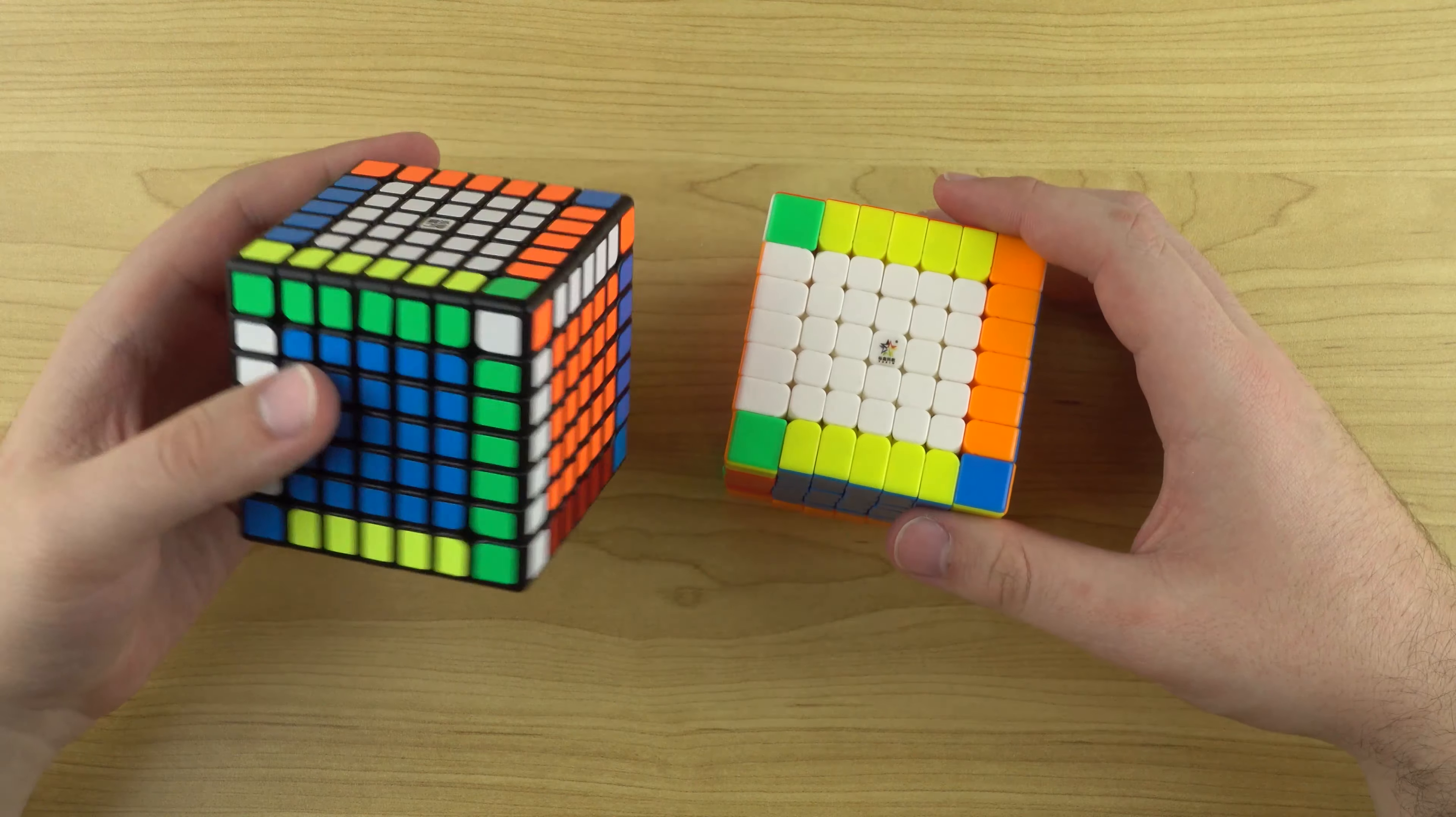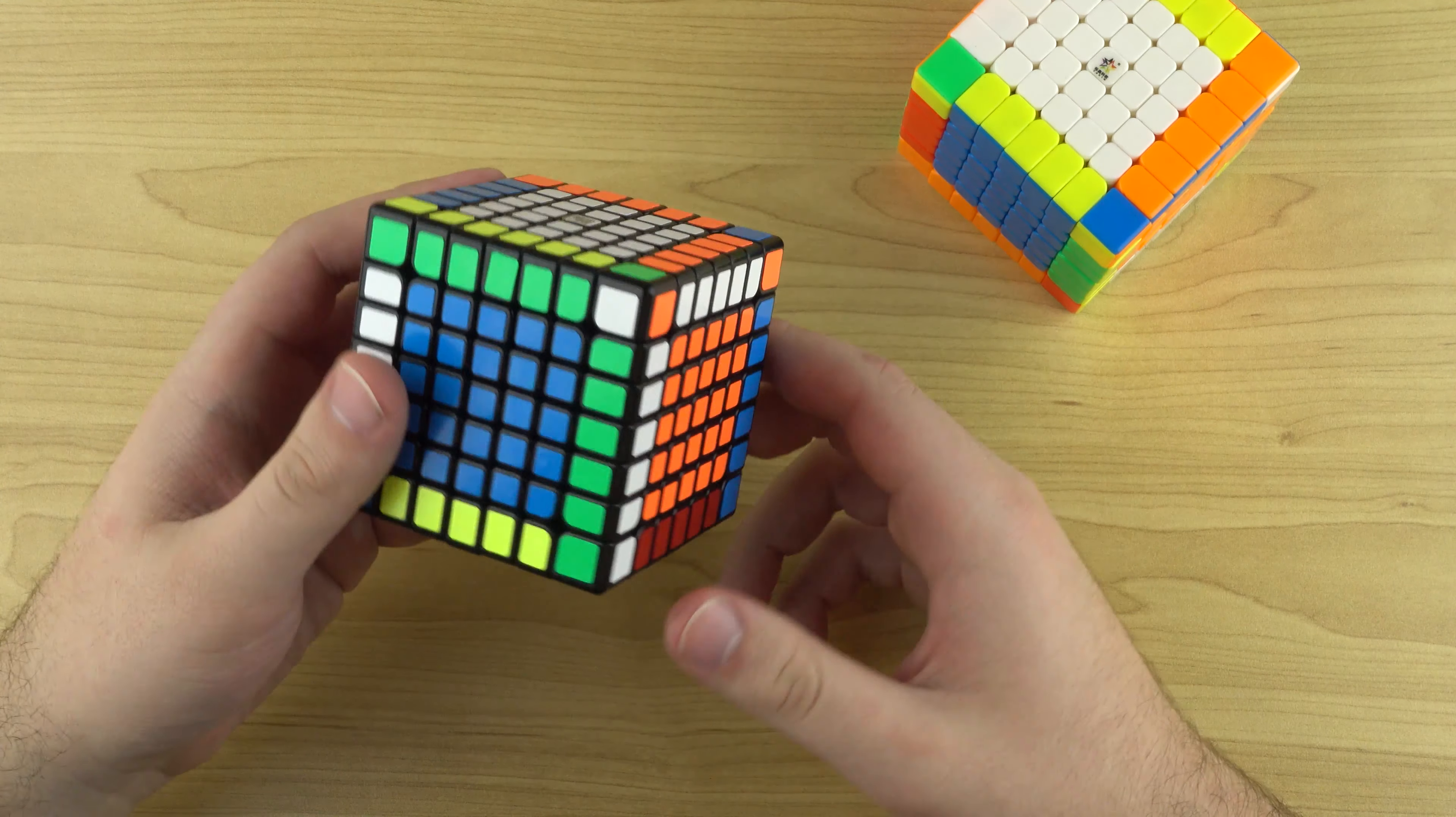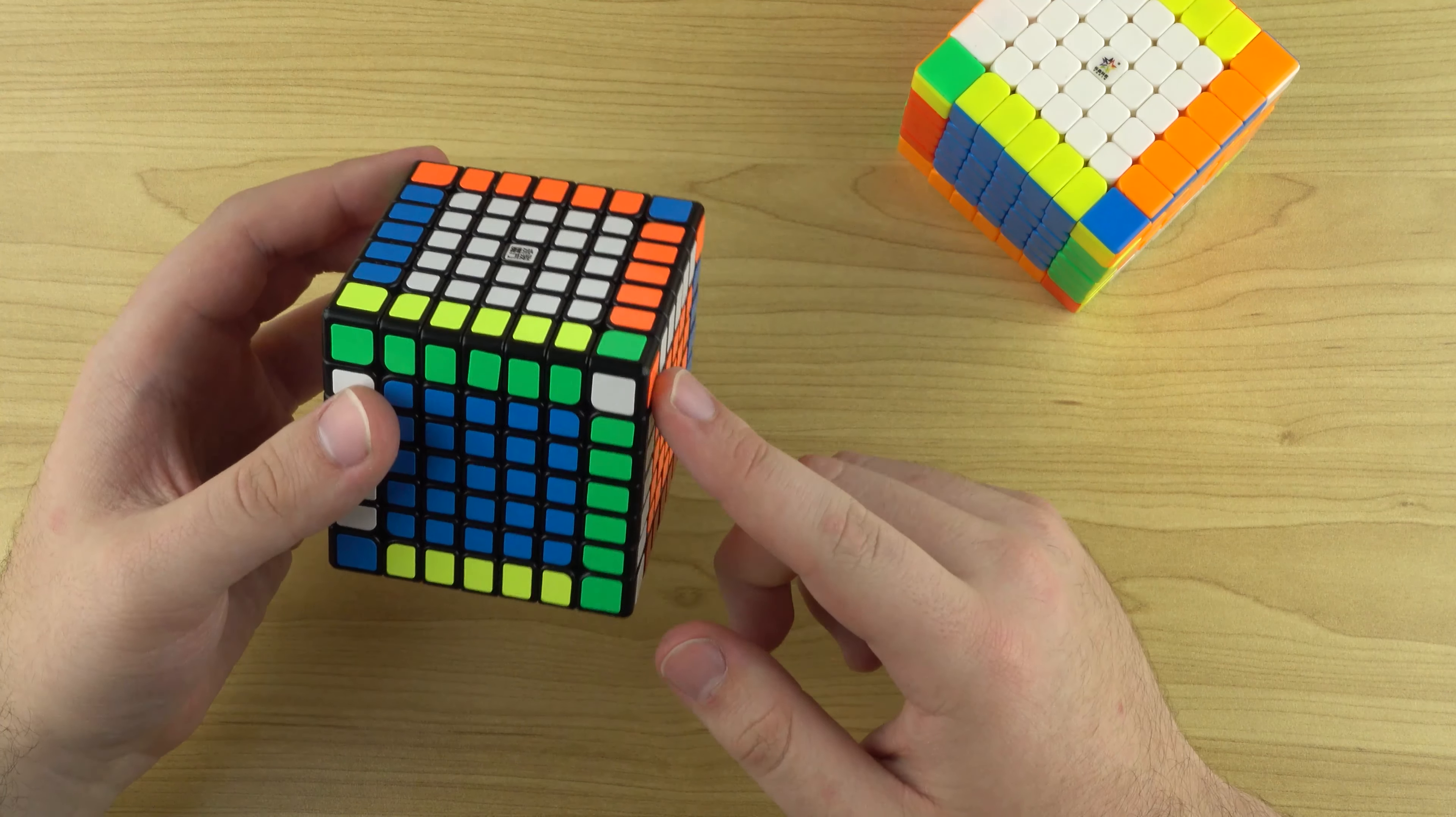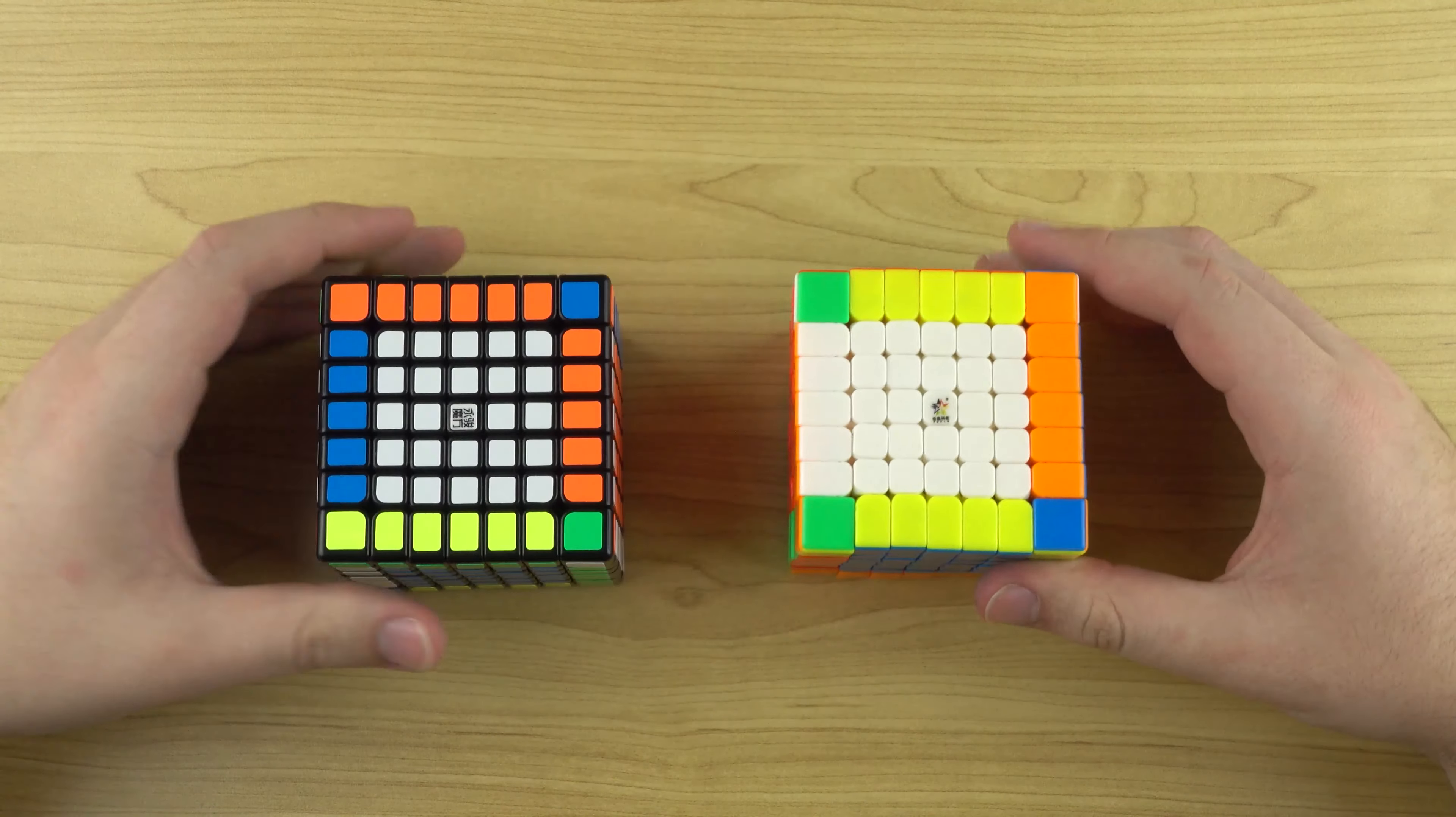I mean, it's already incredible that in 2019, we have a magnetic 7x7 that's $27.50 Australian. I mean, I know when the Valk 3 first came out, it was $26.50 Australian. So this is only one dollar more than a non-magnetic Valk 3 when it first came out. So that's very impressive. Very impressed with both these puzzles.